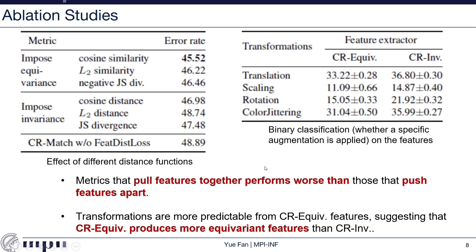Here I show the ablation studies investigating the effect of different distance functions in the unlabeled data loss. We tested three distance metrics: L2 distance, cosine, and JS divergence. Based on whether the model minimizes the distance or the negative distance, we grouped them into equivariance — where features are pushed apart — and invariance — where features are pulled together. We can see that for each distance metric, minimizing cosine similarity (pushing features apart) is about 1.5% better than minimizing cosine distance (pulling features together). Also, either imposing equivariance or invariance outperforms the vanilla model without Fisher distance loss, which gives a 48.9% error rate.